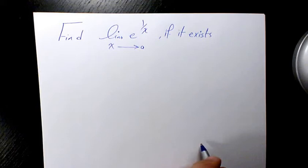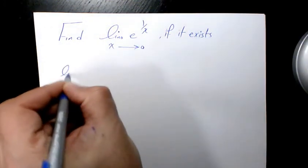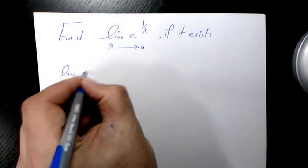In order to have a limit we need to find out the right limit and also the left limit. It means that we need to find limit of e^(1/x)